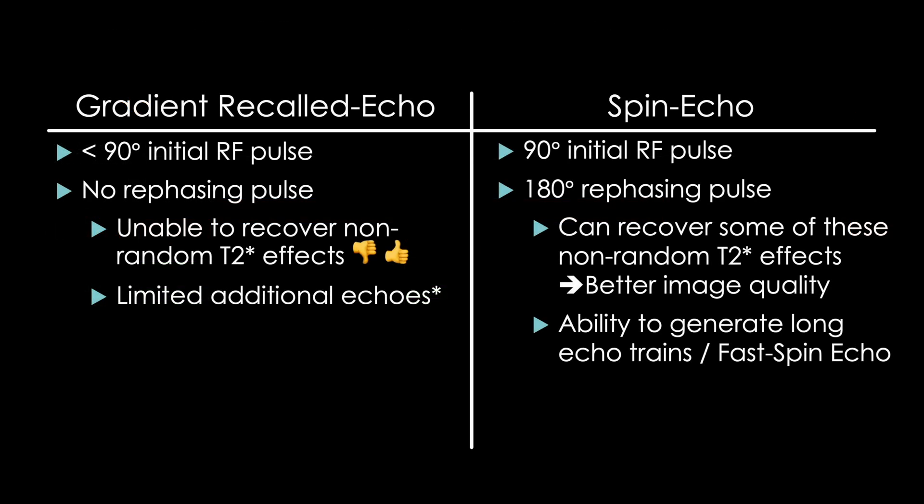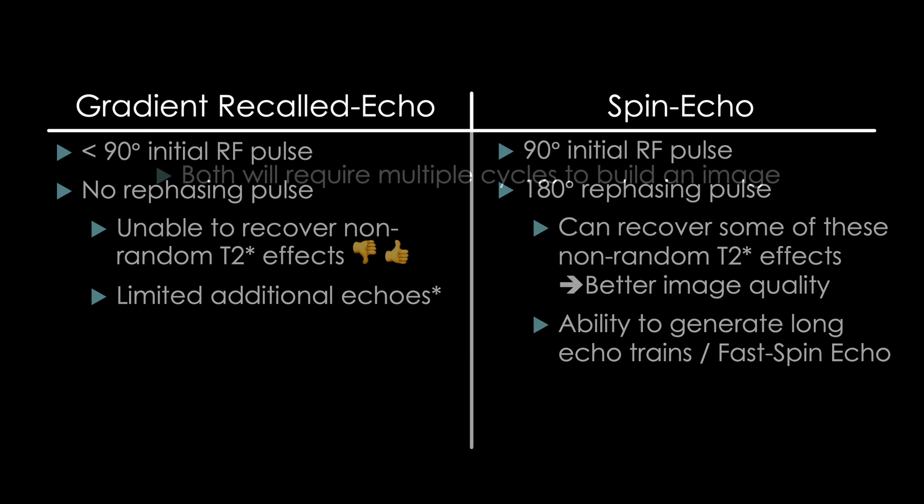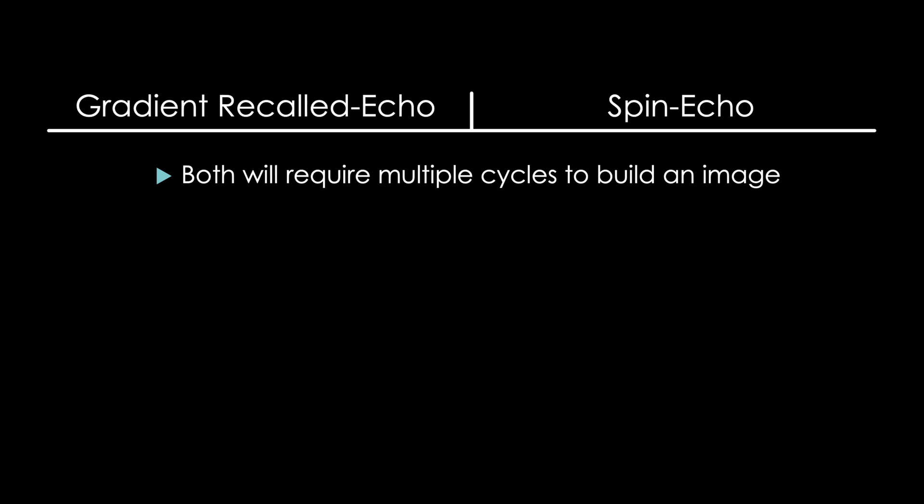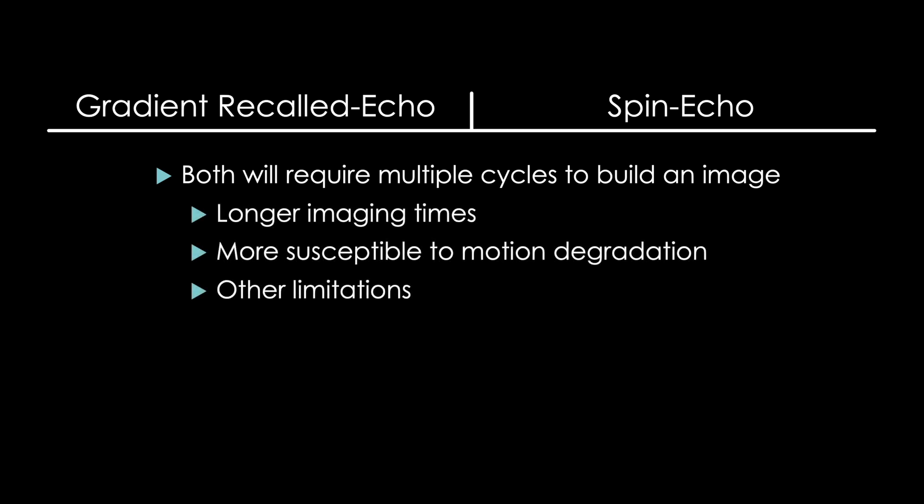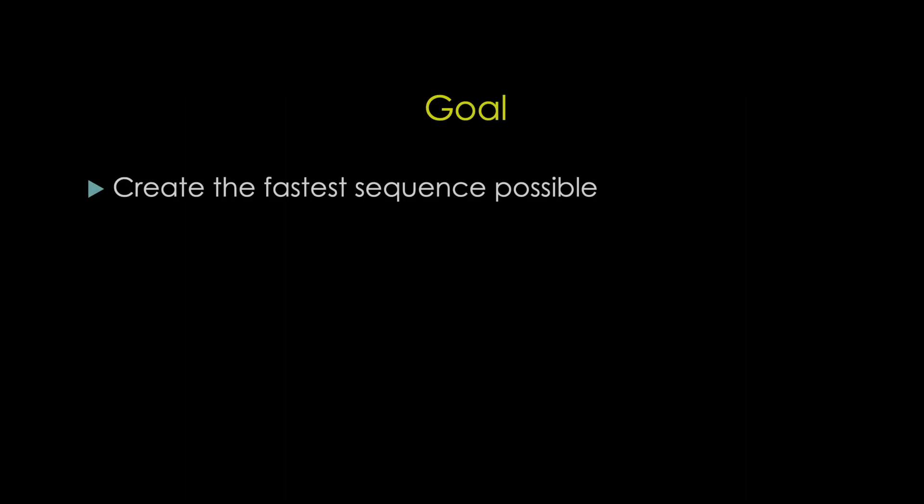So where do we go from here? We've pioneered two distinct techniques for generating echoes and images, each with their own advantages and disadvantages. So is there even a need for other MRI sequences? Well despite all the progress we've made, there's one major limitation to both of these techniques no matter how clever we get. Both of these will require multiple cycles to build an image, and the disadvantage to this is we'll have longer imaging times that are more susceptible to motion degradation. And for some information we may want to get out of the image, these techniques are just not fast enough. So let's pretend for a moment we aren't technically limited in any way and free to design any sequence we want with the only goal of making this process as fast and efficient as possible.